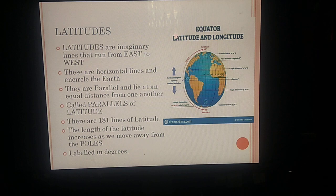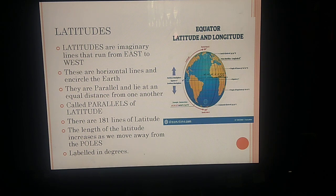Latitudes are imaginary lines that run from east to west. They encircle the earth horizontally. These lines are parallel and lie at an equal distance from one another, hence they are also known as parallels of latitude. The length of the latitudes increases as we move away from the poles towards the center of the earth. There are 181 lines of latitude in total.